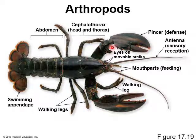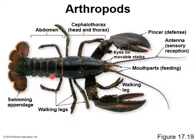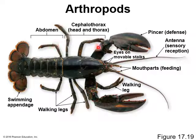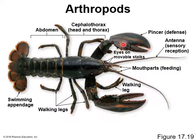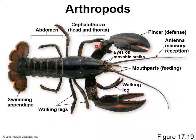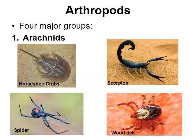A typical arthropod body has three segments: a head, a thorax, and an abdomen with smaller sub-segments. They also have jointed appendages — for example, a lobster's crushing claw has multiple joints allowing it to move in all directions. The same applies to antennae, eyes, and legs, giving arthropods many movable parts to navigate their environment.